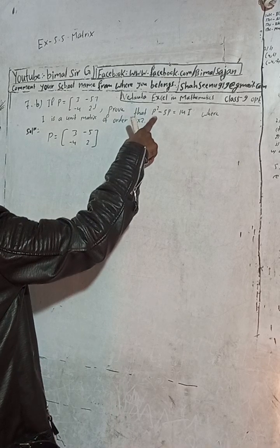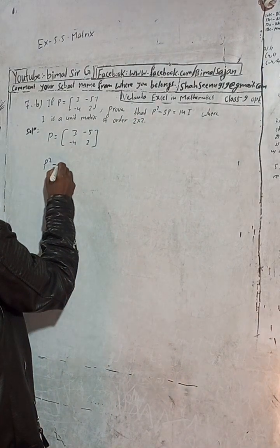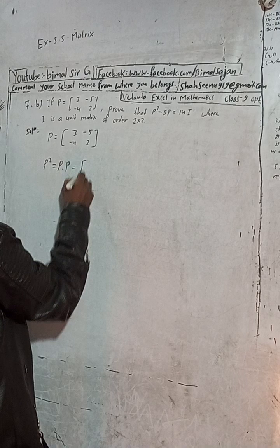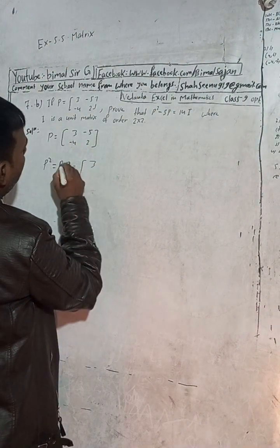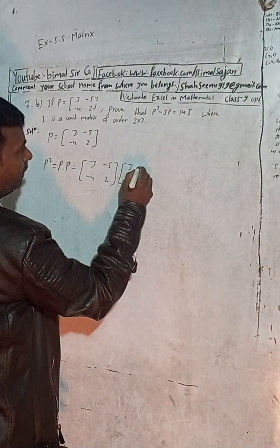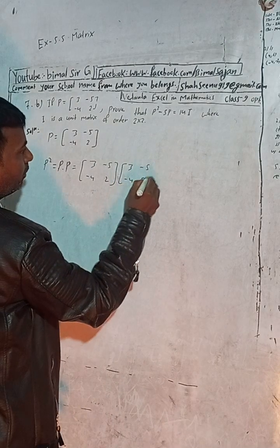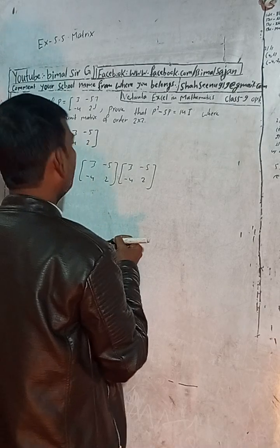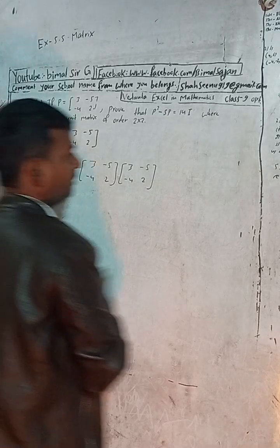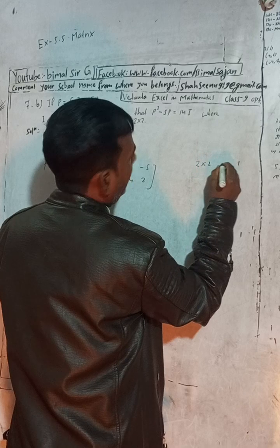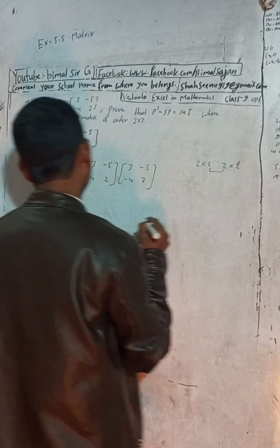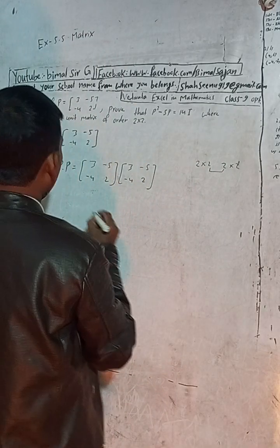First, find P². P² means P dot P, or P into P. This equals P times P, where P = [3, -5; -4, 2] multiplied by [3, -5; -4, 2]. This is a 2×2 matrix, so for a square matrix the product is possible because the first matrix is 2×2 and the second matrix is also 2×2.